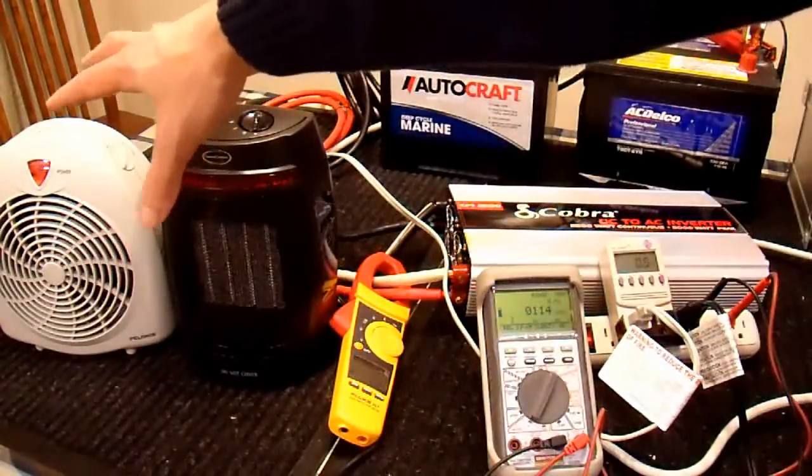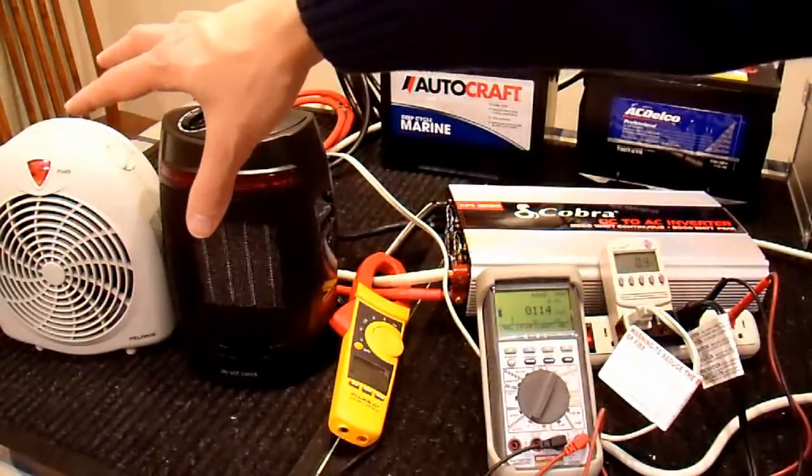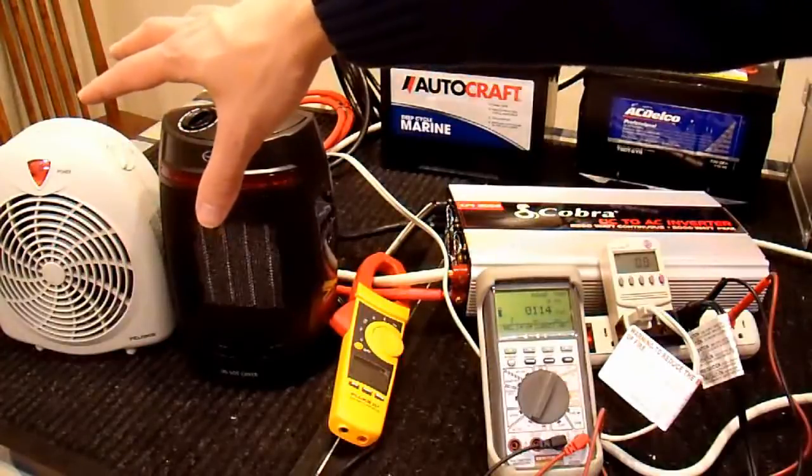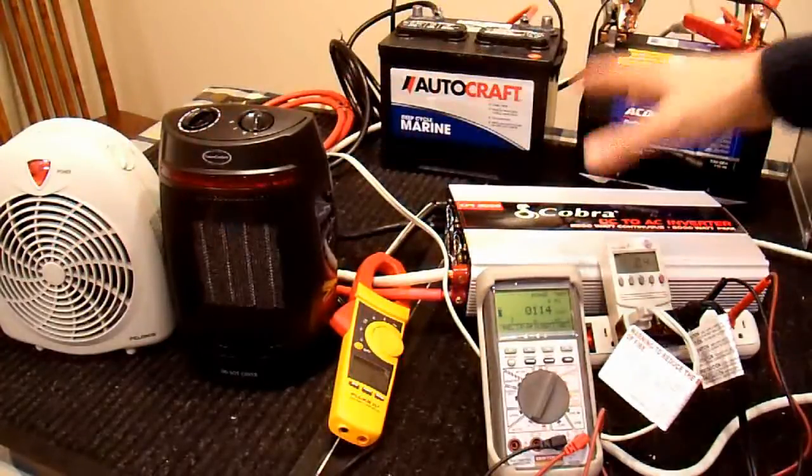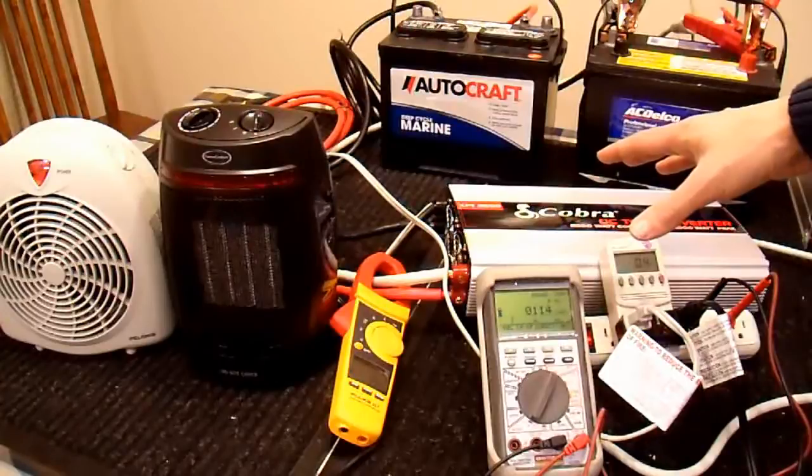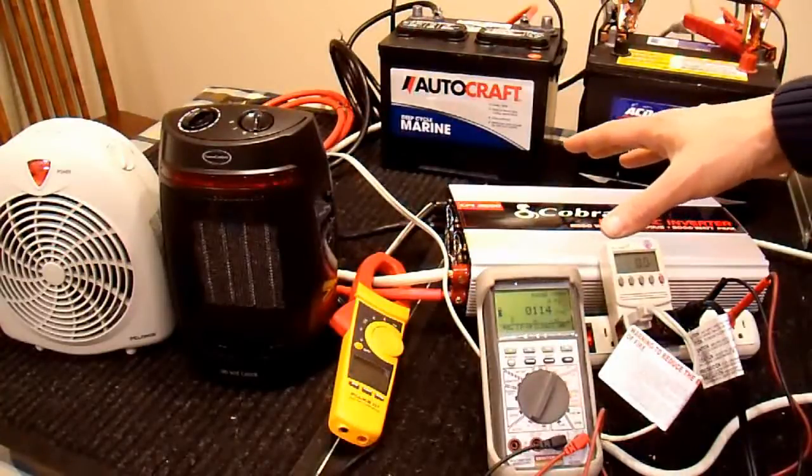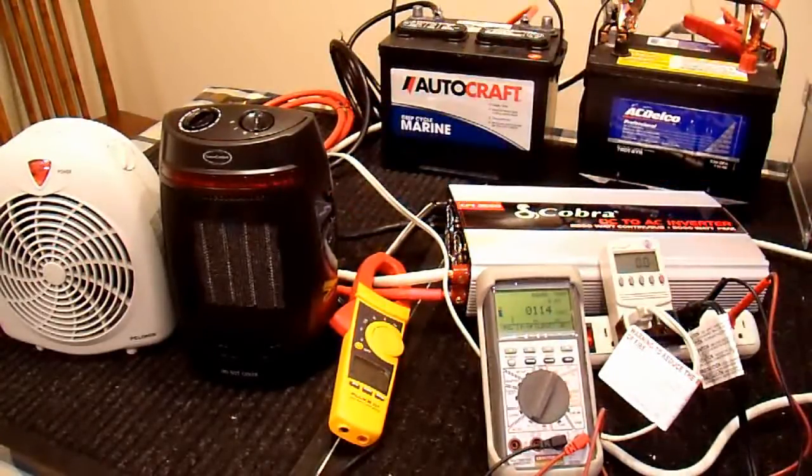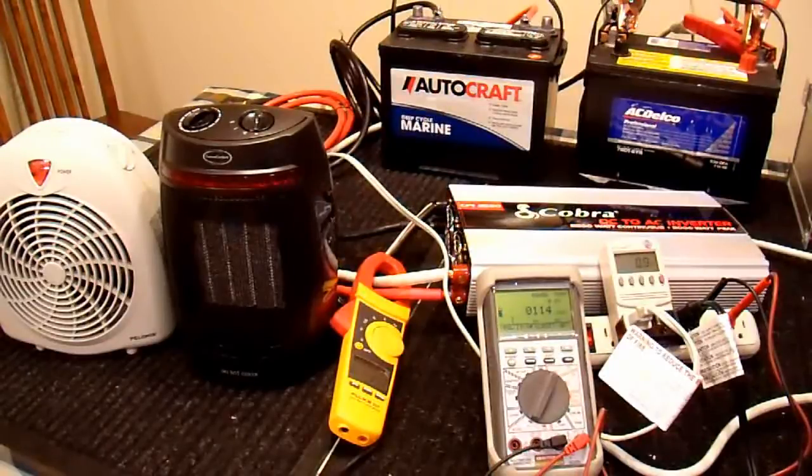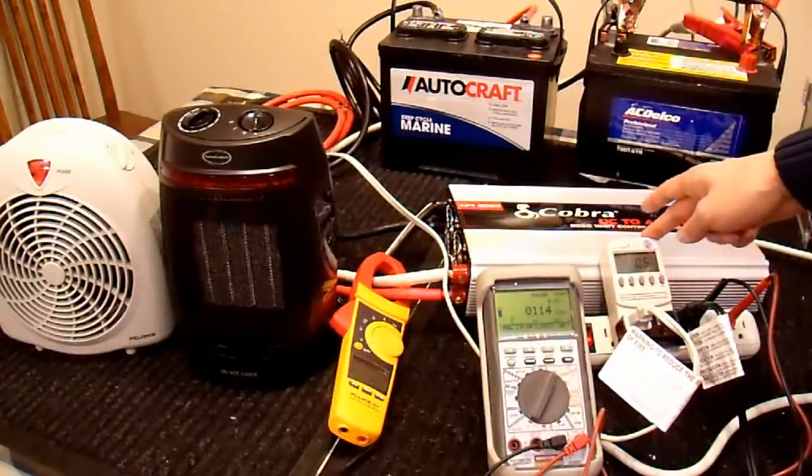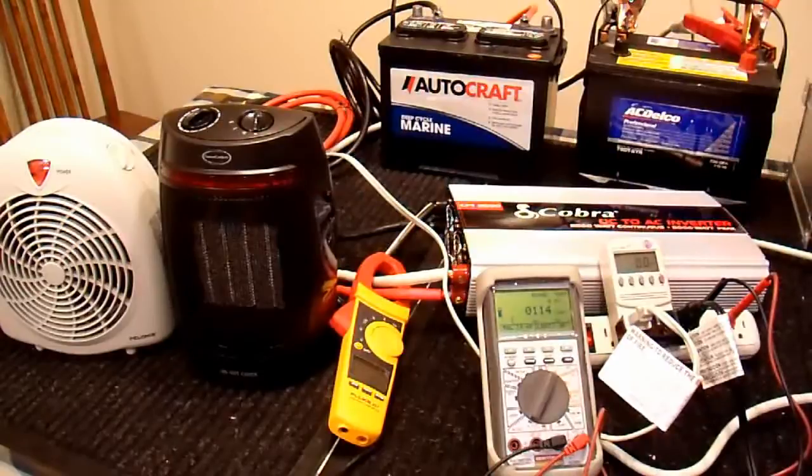And I have two electric heaters over here. They're each 1500 watts when they receive 120 volts. If the output voltage of this inverter sags somewhat below 120 volts, they'll draw less than 1500 watts, since the output power of a resistive load is proportional to the square of the voltage. So that's why I have this kilowatt meter here, because then I don't have to calculate it. It's much easier.